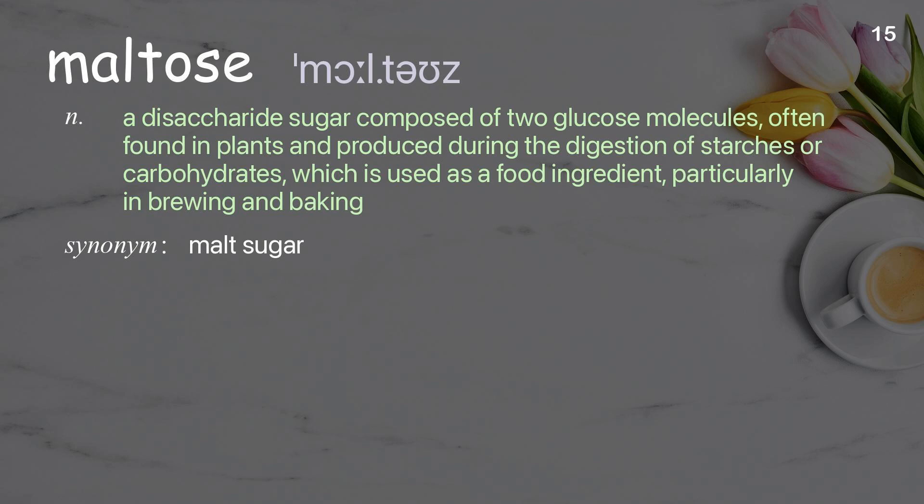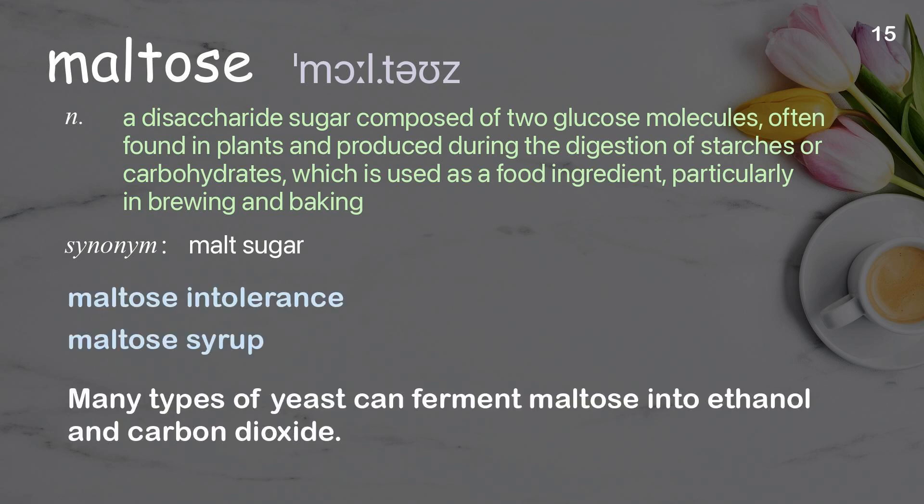Maltose. A disaccharide sugar composed of two glucose molecules, often found in plants, produced during the digestion of starches or carbohydrates, and used as a food ingredient particularly in brewing and baking. Examples: maltose intolerance, maltose syrup. Many types of yeast can ferment maltose into ethanol and carbon dioxide.